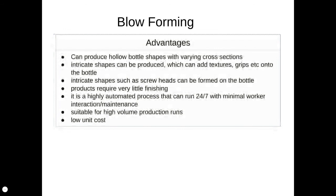Blow forming is really the only way we can produce hollow bottle shapes with varying cross sections. It can create intricate shapes and textures — maybe grips can be moulded onto the bottle just by texturing the inside of the mould. You can also create intricate features such as the screw thread for the cap, formed directly onto the bottle. A blow-moulded product requires very little finishing — as do most plastics. The same could be said for injection moulding and vacuum forming; plastic is a self-finishing material.